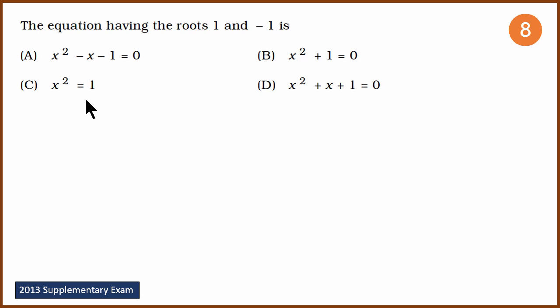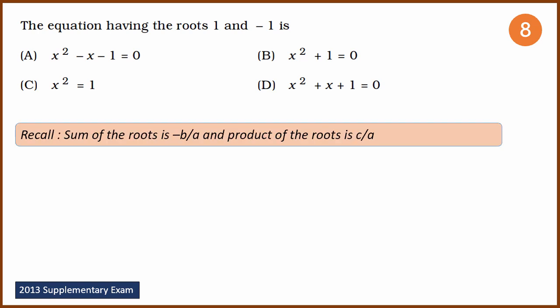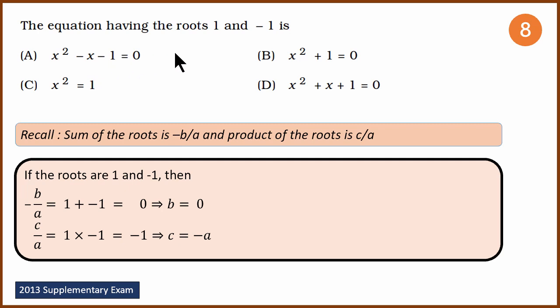Next question: the equation having roots 1 and minus 1 is? This is an interesting question and we can solve it in two ways. The first is obvious: x squared equals 1, which means x equals plus or minus 1. So the answer is C. We can also use the sum and product of roots — the sum of the roots is minus b by a, and the product is c by a.